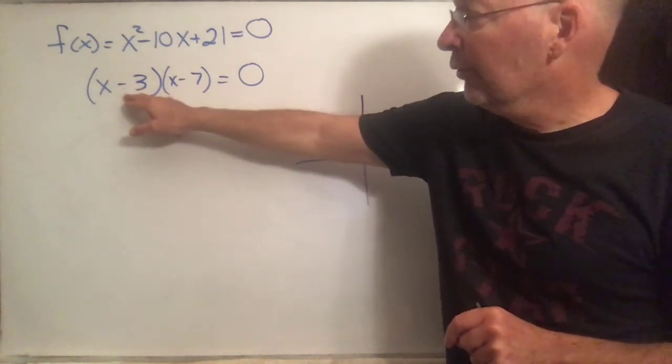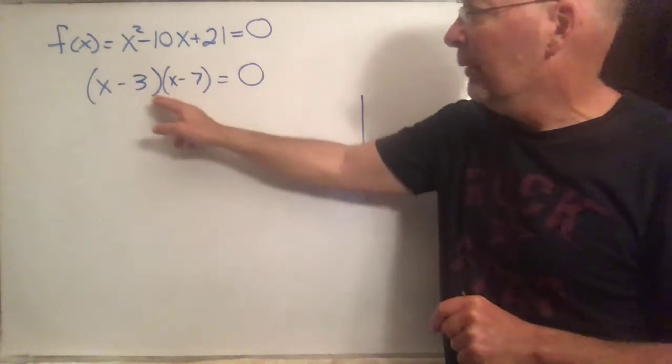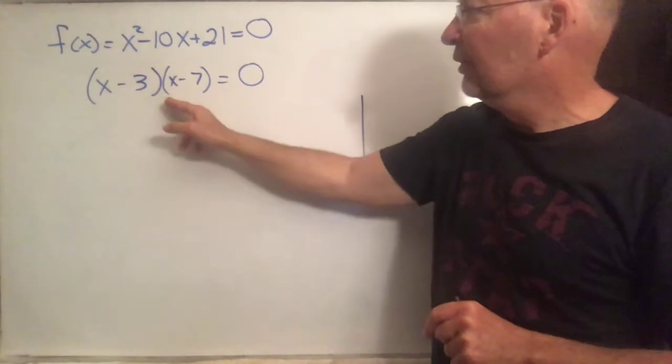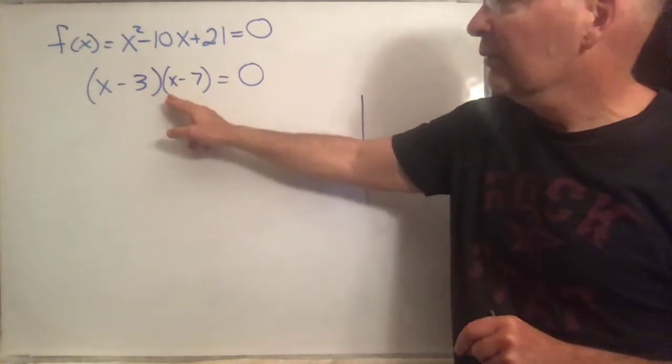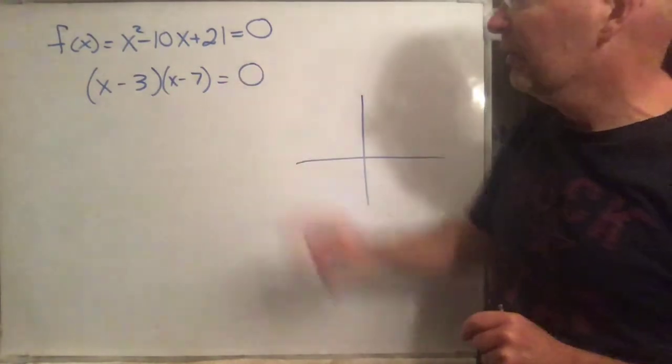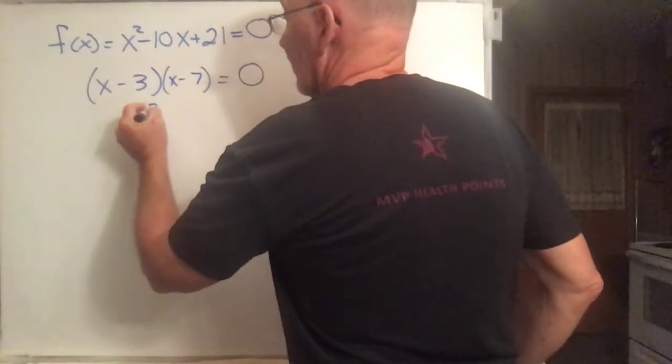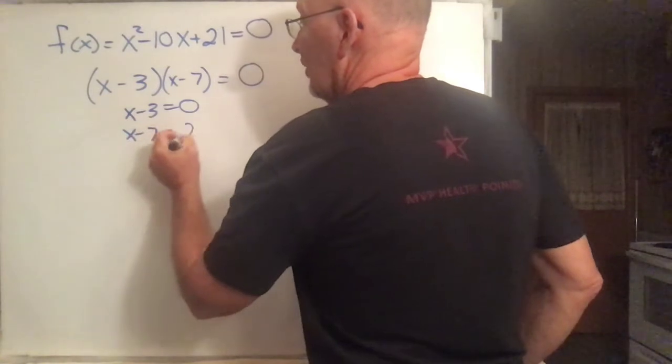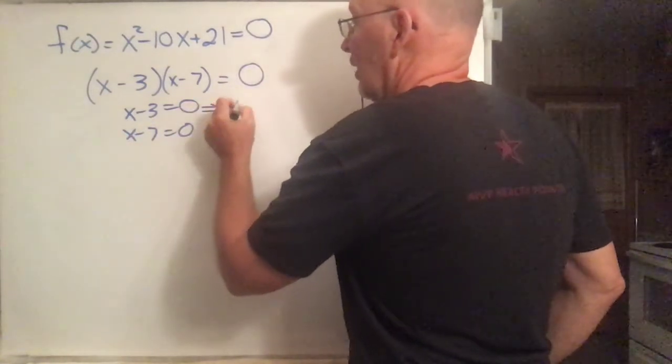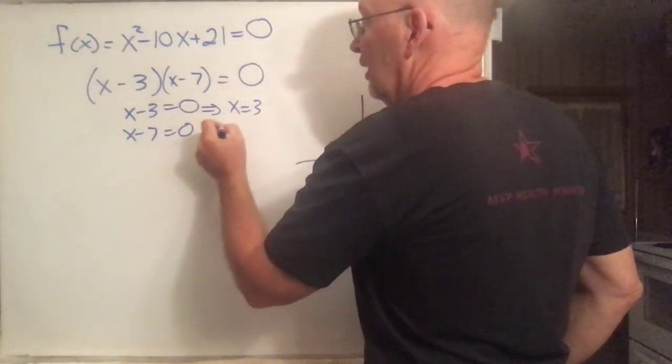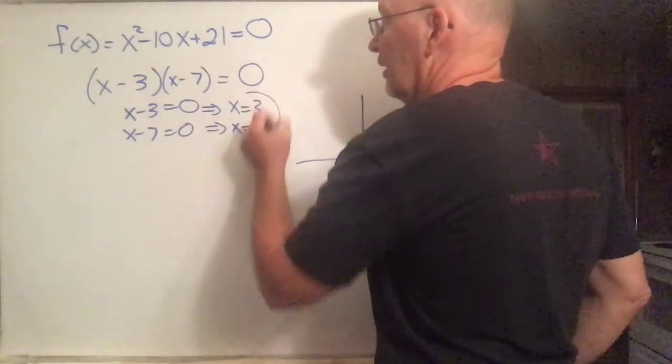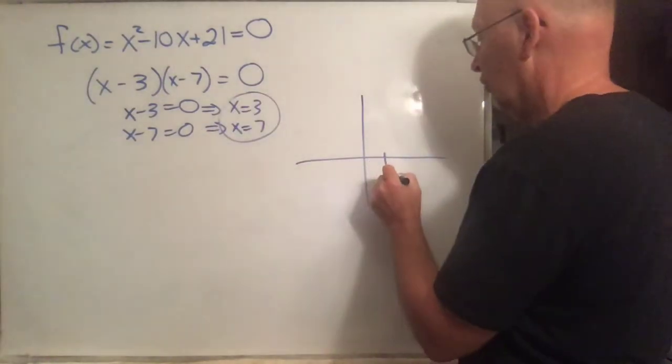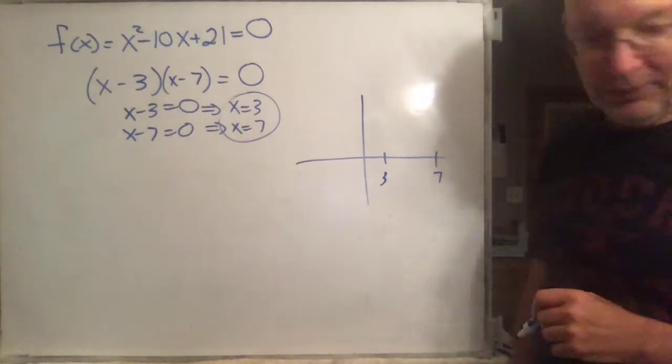This is the same as this, but this is a much more revealing form because now you can see that if x is either 3 or 7, that will make one of these factors equal to zero. One way that this thing could be zero is for this to be zero. Another way for it to be zero is for that to be zero. That means x equals 3, and that means x equals 7. So those are the two x-intercepts.